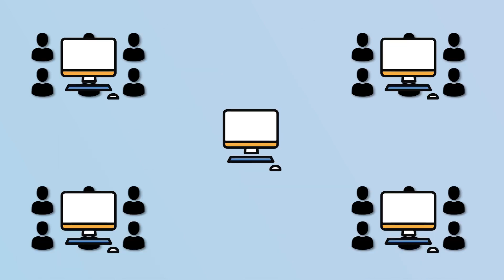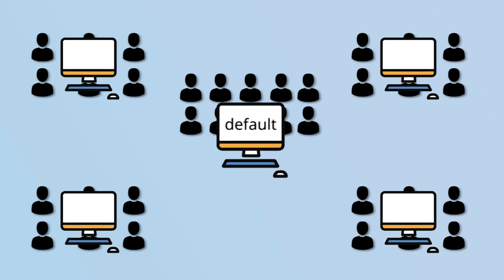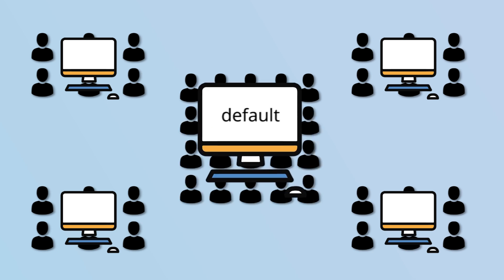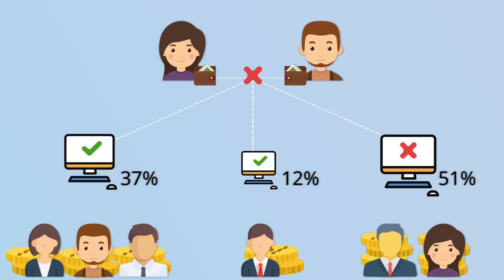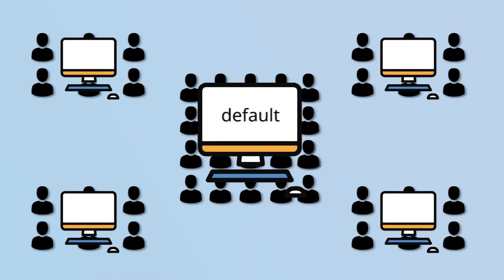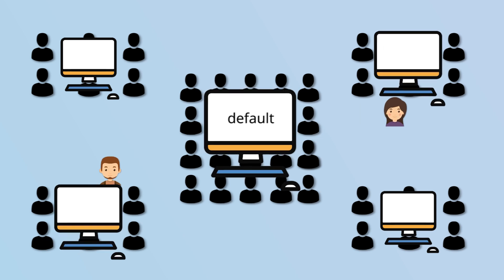Each wallet has a default representative, so there are likely a lot of people using this default node. If a representative has too much voting power, it could validate or reject transactions on its own and perform malicious actions on the network. That's why it's important to choose your representative node.